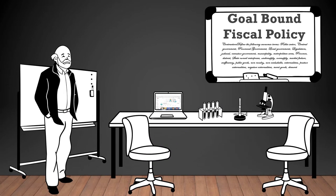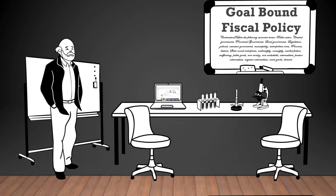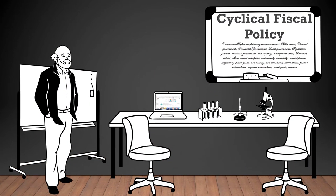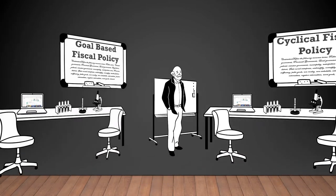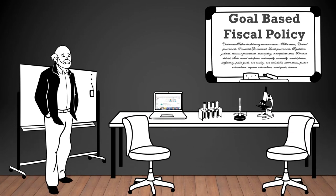Goal-bound fiscal policy: a fiscal policy that is designed to achieve specific economic goals, such as reducing inflation, promoting economic growth, or achieving budget balance. Cyclical fiscal policy: fiscal policy measures that are implemented in response to the stage of the business cycle, aiming to stabilize the economy and counteract economic fluctuations. Goal-based fiscal policy: a fiscal policy that is driven by predetermined economic objectives, such as reducing unemployment or promoting income equality. Goal-biased fiscal policy: a fiscal policy that is influenced by the political objectives or biases of policymakers, rather than solely focusing on economic goals.